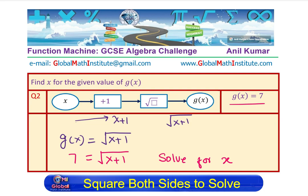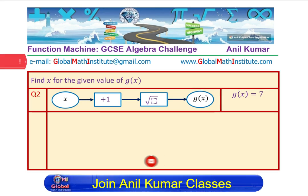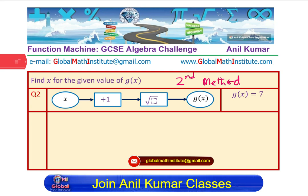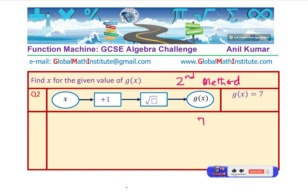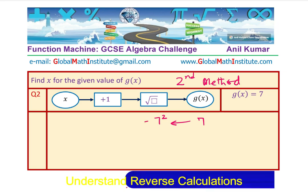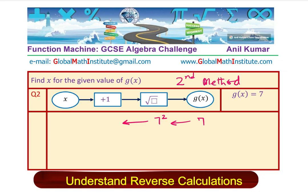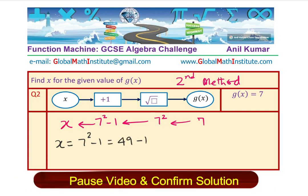This is our equation to be solved. I would like you to now pause the video and solve the equation. Solve for x. This time, I would like you to see the operations in the reverse order, which I explained last time. Let us do the reverse operation now. This is the second method. G of x is given to us as 7 as the output. Square root means I will do reverse of this, which is 7 square. And then, reverse of this will be 7 square minus 1 and that should give me x. Clearly, I could calculate the value of x as equal to 7 square minus 1, which is 49 minus 1 or 48.